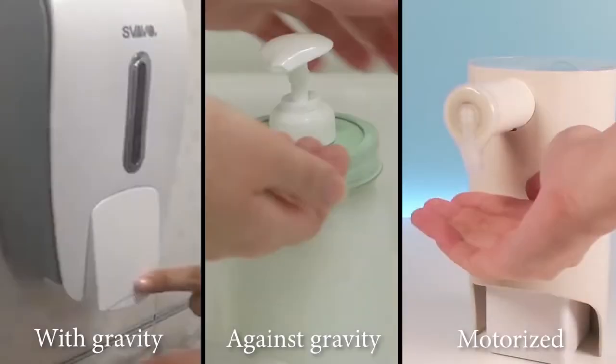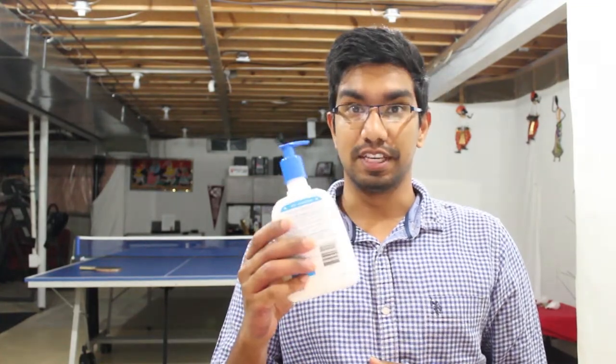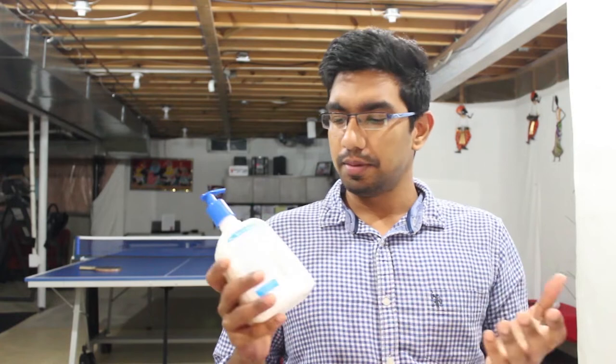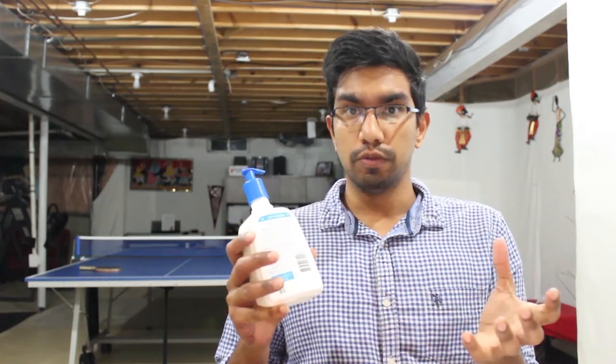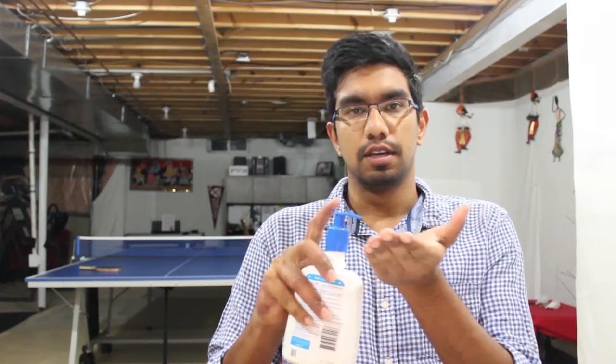Soap dispensers come in many forms. But at home, you probably use one of these. Now, the idea behind these kind of soap dispensers is to move soap from a reservoir into your hands with just the push of a button. Basically that means you have to move the soap against gravity. And there are a couple of ways you can do this. You can either push the soap up, you can pull it, or you can use a combination of both.